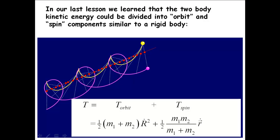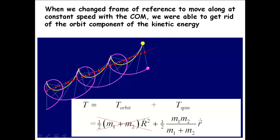In our last lesson, we learned that the two-body kinetic energy could be divided into an orbit and spin component, similar to how we did it with the rigid body — dividing it into an orbit and a spin component. If we change the frame of reference, we say that R-dot is equal to zero if we're moving along with the center of mass frame, because the relative motion between us and the center of mass is zero, so we can ignore that term.